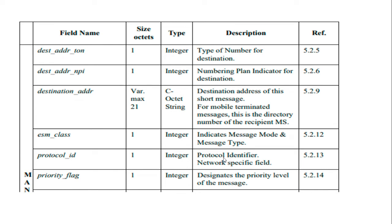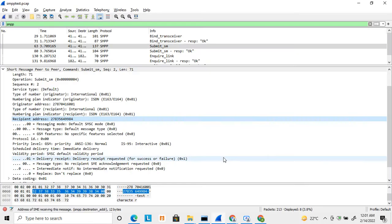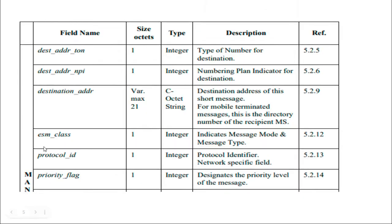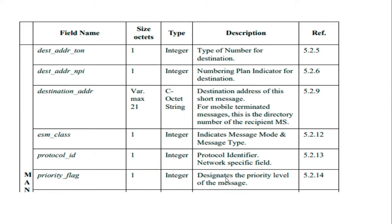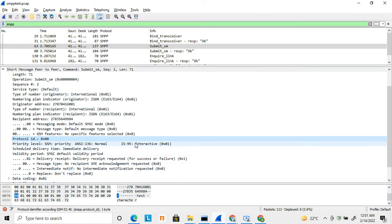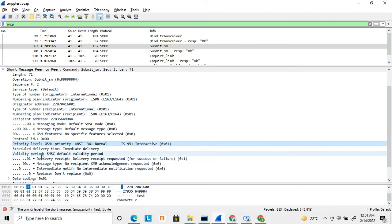Next is the protocol ID, which is a network-specific field and is not much used by the ESME — it is set to zero. After that comes the priority flag, which also has different values. You can set immediate priority or lower priority; the higher the priority, the earlier the message will be fetched and delivered. The priority flag is one byte in size.